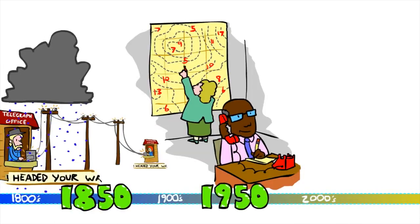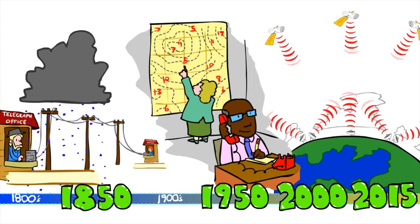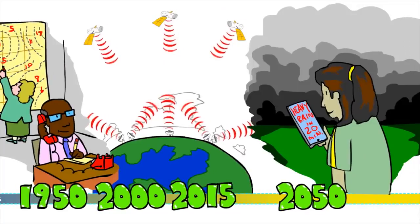Just look at how far we've come. 1850? 1950? 2000? 2015? In 2050, weather forecasting will be better still.